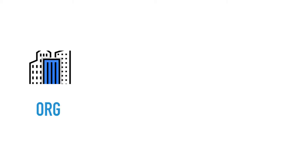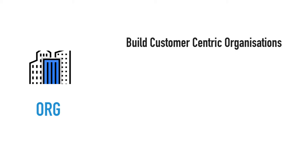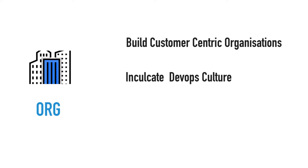If you're a C-level executive driving the organization, you're responsible for building a customer-centric organization. With DevOps you're taking a holistic approach, and many principles we label as DevOps are also agile principles. You'll drive those practices and inculcate a DevOps culture by making sure your people are aware of them. You need to have a strong belief in automation, because a lot of practices translate to incorporating automation — and that's essentially what you need to know about DevOps at that level.